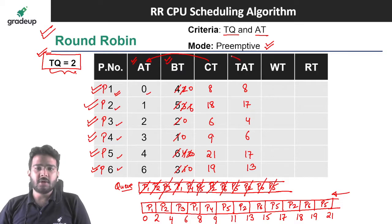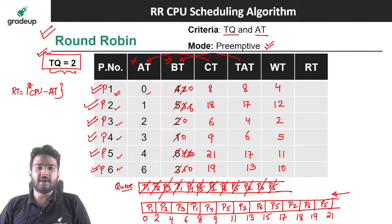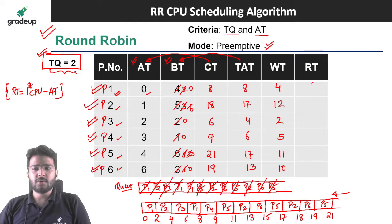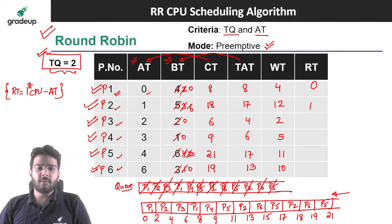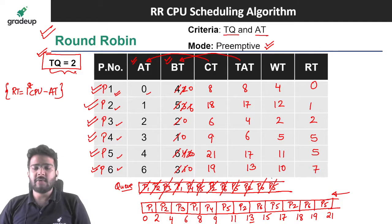Waiting time is turnaround time minus initial burst time: P1 = 4, P2 = 12, P3 = 2, P4 = 5, P5 = 11, P6 = 10. Response time is first CPU allocation time minus arrival time: P1 = 0 − 0 = 0, P2 = 2 − 1 = 1, P3 = 4 − 2 = 2, P4 = 8 − 3 = 5, P5 = 9 − 4 = 5, P6 = 13 − 6 = 7. You can now find the average turnaround time, average waiting time, and average response time.